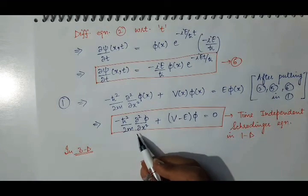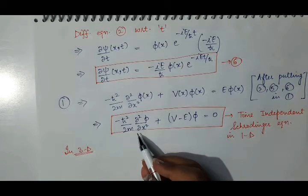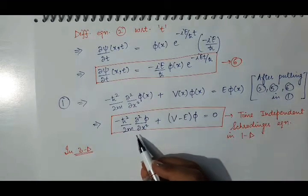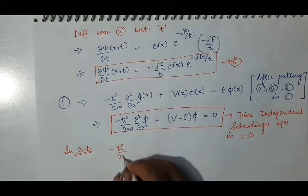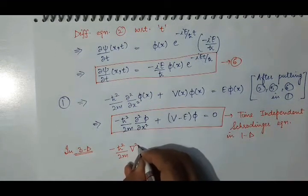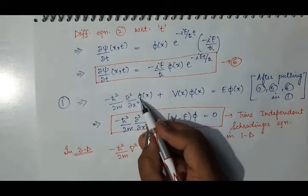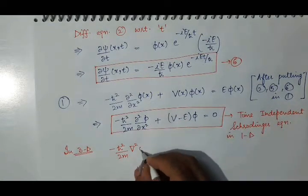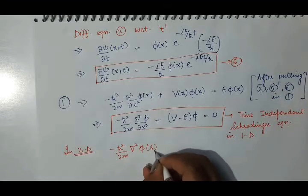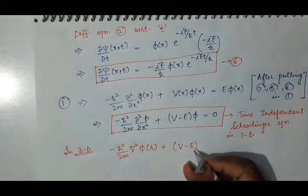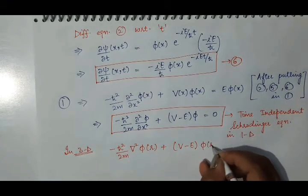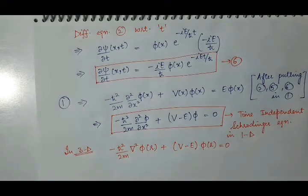We will have del square. So, in 3D, this equation will be minus h-cut square by 2m del square. And this phi will be a function of x, and here phi will be a function of r, plus v minus e phi r. This is the time independent Schrödinger wave equation in 3 dimensions.